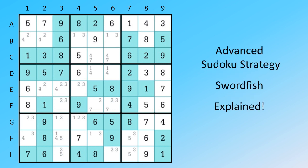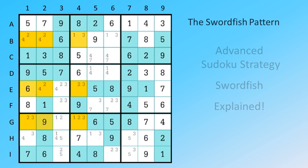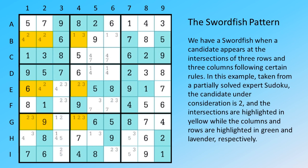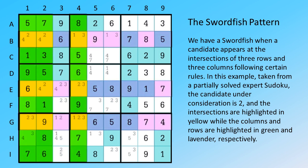Advanced Sudoku Strategy Swordfish Explained. We have a swordfish when a candidate appears at the intersections of three rows and three columns following certain rules.